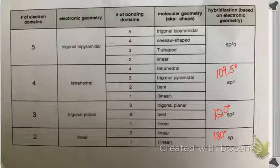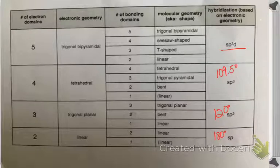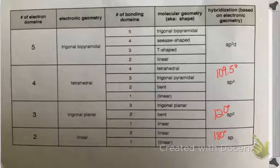As you noticed on your sheet, we didn't encounter any SP3D hybridized molecules. The bond angle on those actually would depend on which ones you're looking at, because they don't have a consistent bond angle like the others we've discussed. So you will not have those on the test, but you are aware that they exist.